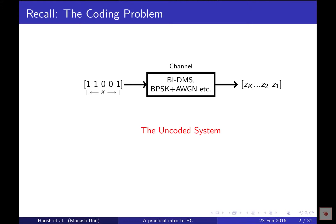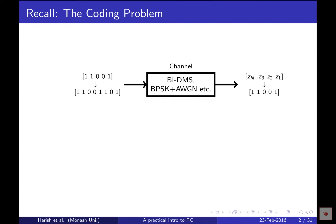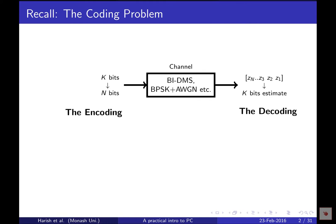Shannon's idea is to improve performance by adding redundancy. In simple words, we take k bits, convert them into n bits, transmit those n bits instead of the original k message bits, receive noisy versions of the n coded bits, and estimate the original message from those noisy coded bits. So we are encoding and decoding rather than directly transmitting and estimating — doing estimation in an intelligent way.